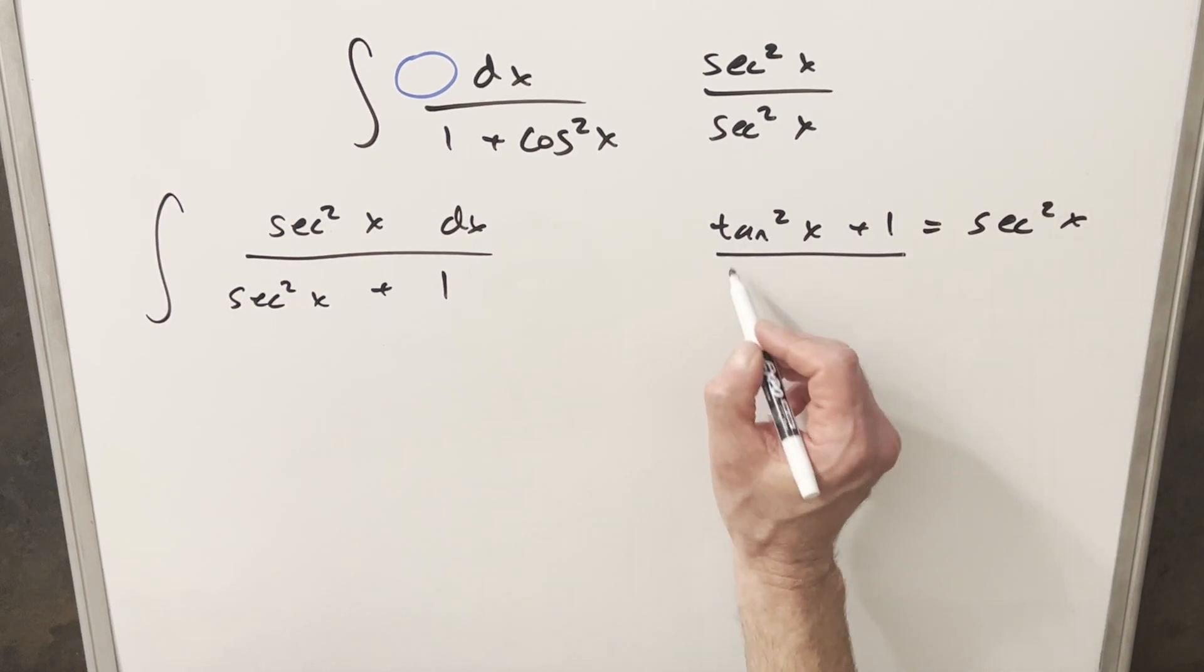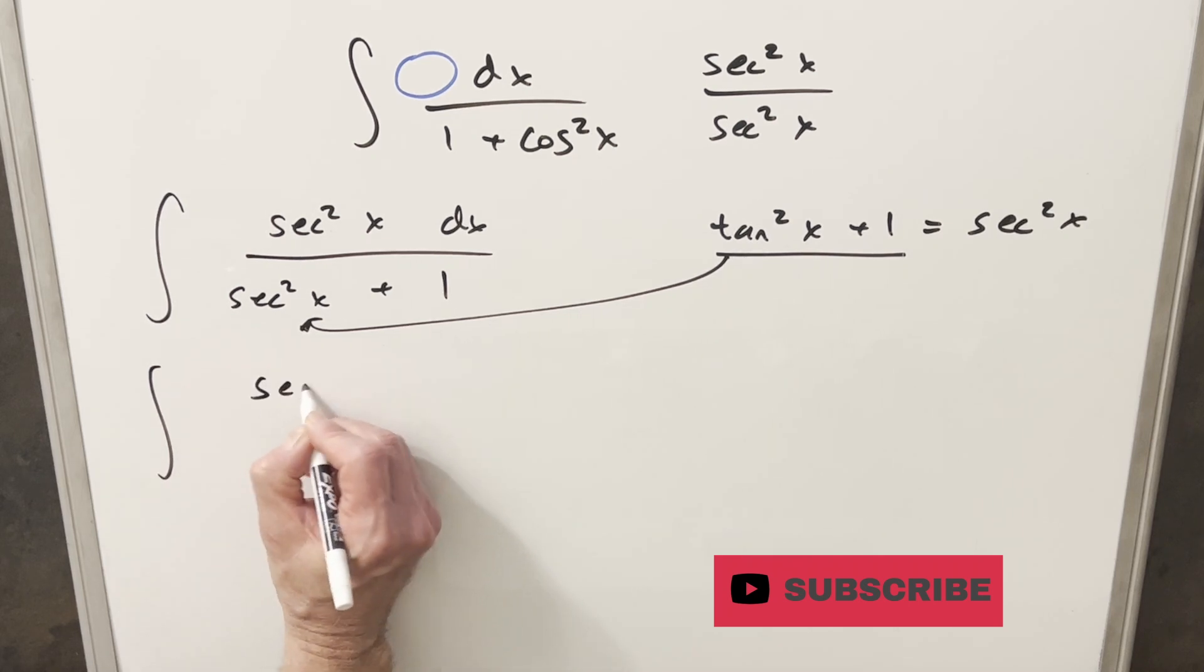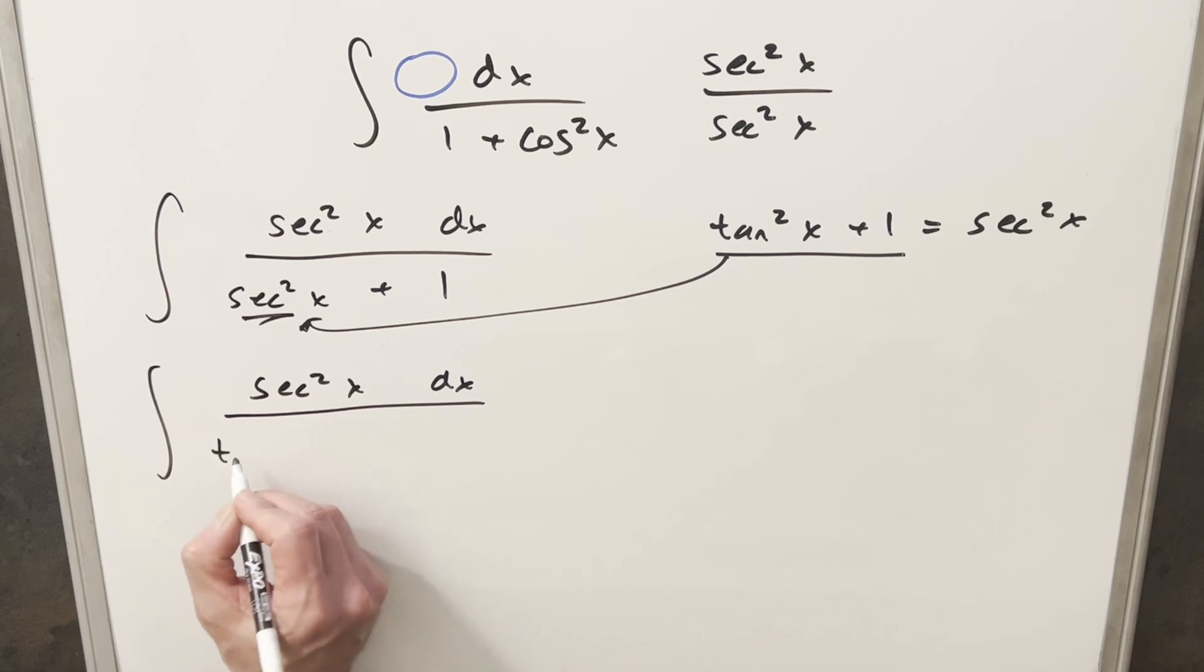So what I can do is take this here and plug it back in for this secant squared and rewrite everything. This is going to give me secant squared x dx in the numerator. In the denominator, we're going to have tan squared x plus 1, but we'll add to this 1 and we'll end up with plus 2.